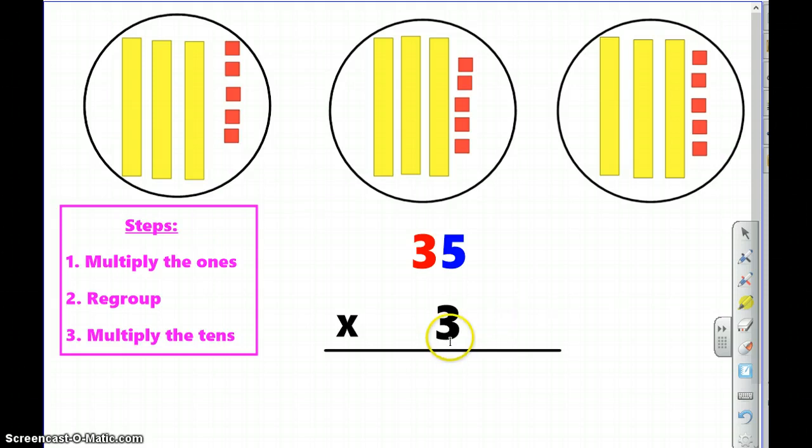Our first step tells us we need to multiply the ones place. So, I'm going to multiply three times five. Well, I know that three times five is 15. But, can I put 15 in the ones place? No, I cannot. Because I can only put one digit in the ones place. So, that means that we need to regroup.